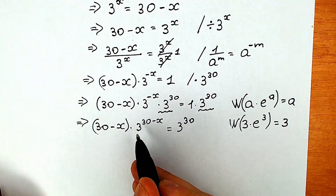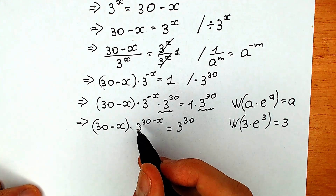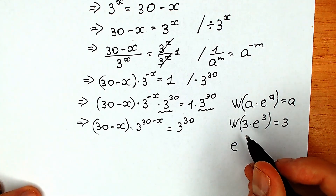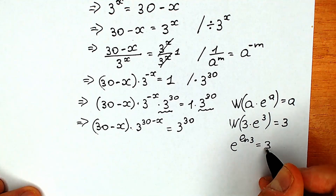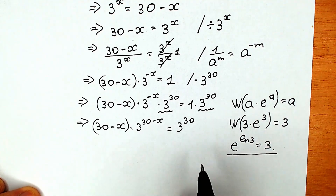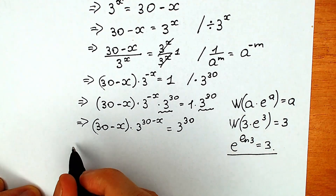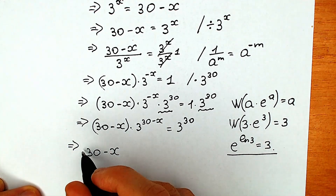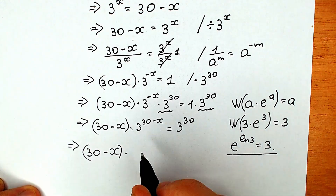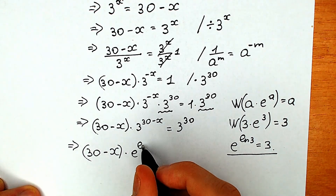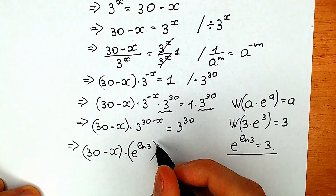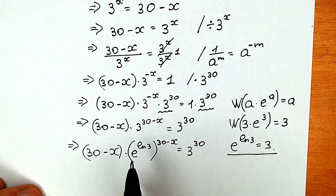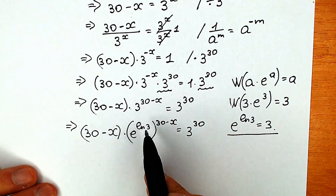We have the same expression 30 minus x appearing twice, but we don't have e. So we need to create e. We can write 3 as e to the power natural log 3. So instead of 3, we write e to the power natural log 3, raised to the power 30 minus x, equal to 3 to the power 30.